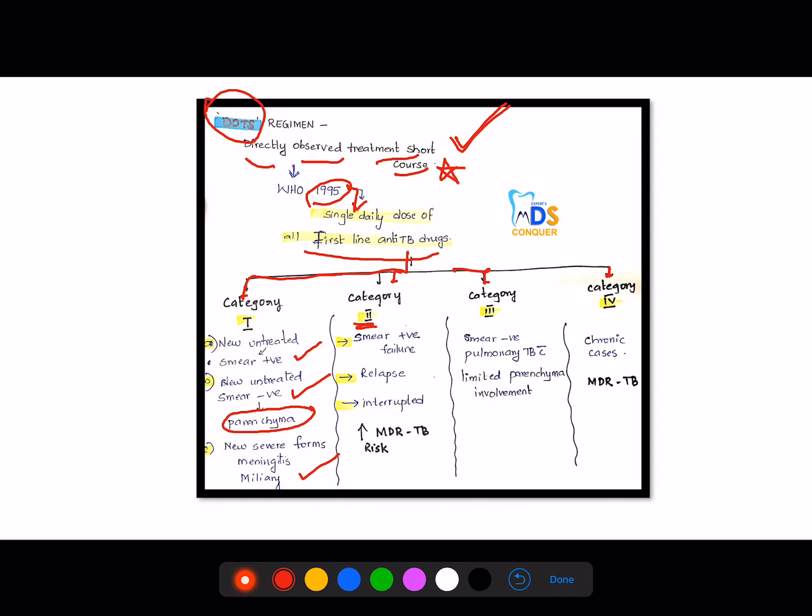Then category 2 patients include smear positive failure, relapse cases, and interrupted cases. And this is very important: this category 2 has a greater risk of multidrug-resistant tuberculosis. Then category 3 includes smear negative pulmonary tuberculosis with limited parenchymal involvement. Then category 4 includes chronic cases, that is multidrug-resistant tuberculosis cases. So these are the categories of patients.